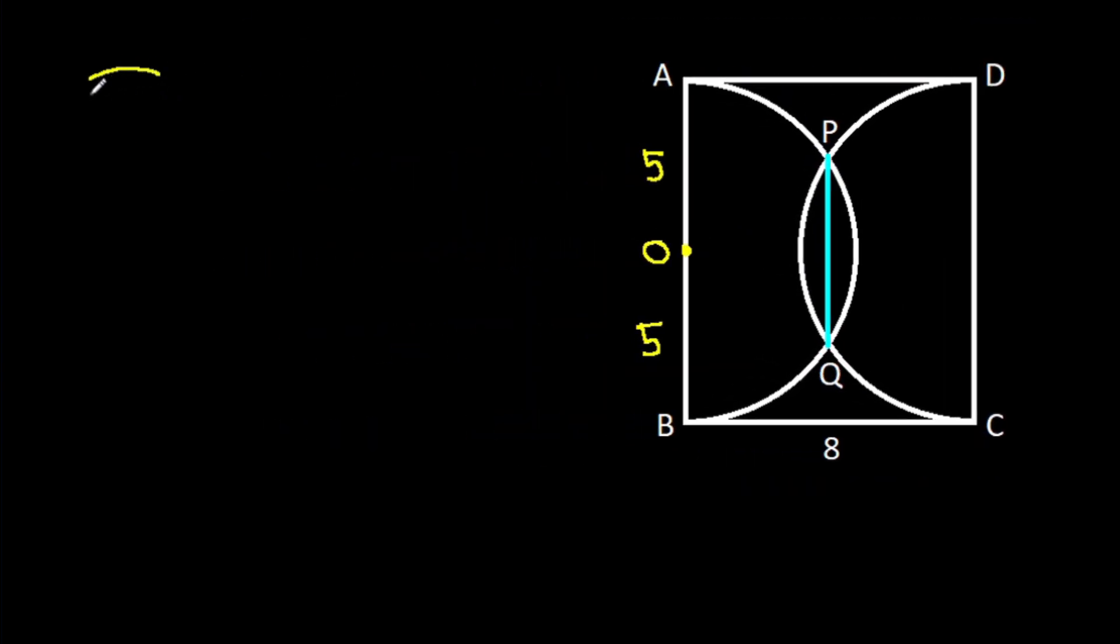In any circle, if PQ is any chord and O is the center, then from point O, if we make a perpendicular on PQ, suppose this point is M, then PM will be equal to QM.